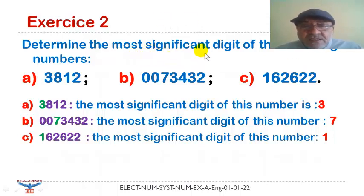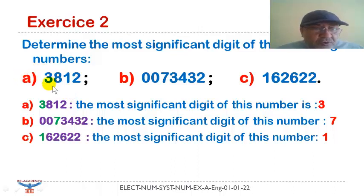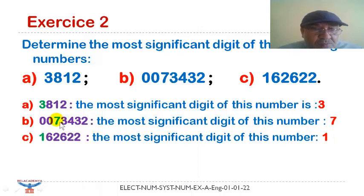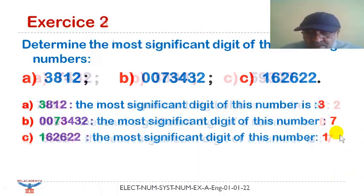Now the question is to determine the most significant digit of the following numbers. The most significant digit means the digit that has the highest weight. For E, we have 3812 — the digit with the highest weight is three. For the next number, there are leading zeros that don't count, so the most significant digit is seven. For the last one, the most significant digit is one.